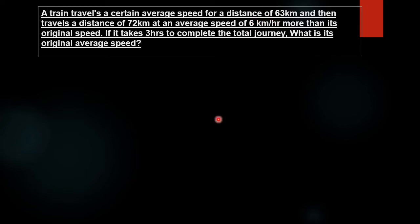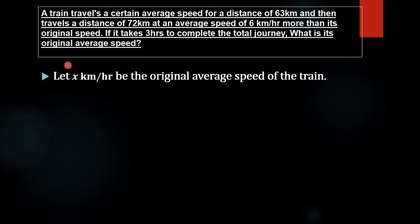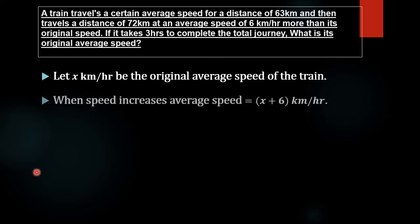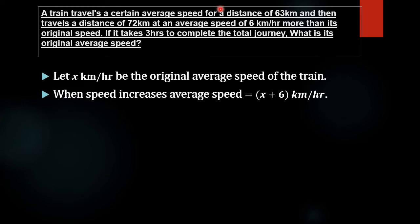For finding this, we have to find the original average speed. So we will form a quadratic equation with the variable x as the original average speed. The increased average speed is given by x plus 6 km per hour.